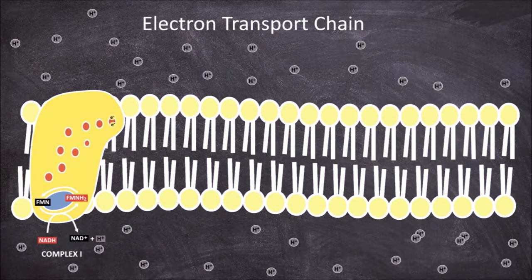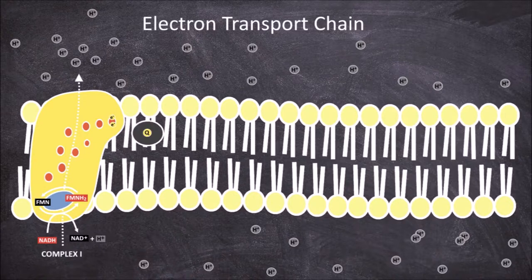Complex 1 is also a proton pump. Energy is released by the electrons as they move to lower energy states along the chain of iron-sulfur redox centers. This energy is used to pump 4 hydrogen protons across the inner mitochondrial membrane from the matrix into the intermembrane space, establishing the hydrogen concentration gradient. There is a pool of carrier proteins, ubiquinone and its reduced form, ubiquinol.